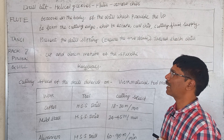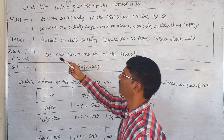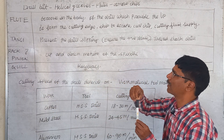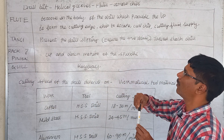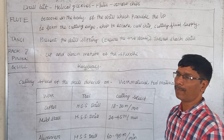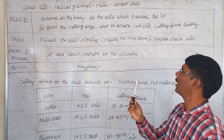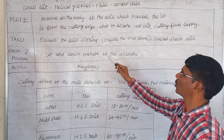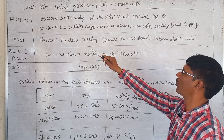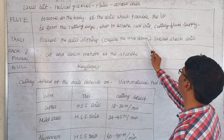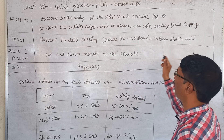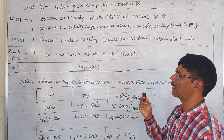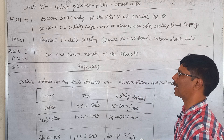The next part of the drill bit is the tang, which is at the end of the drill bit. It prevents the drill from slipping when it rotates. To prevent that slipping, we provide the tang.